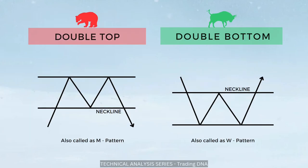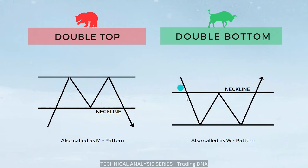Starting with the top and bottom pattern — first is double top and double bottom. Some people call the double top pattern an M pattern, and the double bottom pattern a W pattern. In the double top, when the stock is in an uptrend and buyers lose their strength and sellers come into power, the price pulls back to the neckline and returns to the same resistance zone where buyers lose their power a second time, indicating a possible reversal. Once the price breaks this neckline you can make an entry. Double bottom is the exact opposite: when the stock is in a downtrend, it takes support, swings high, comes back to the same support zone, and reverses, changing the downtrend into an uptrend.